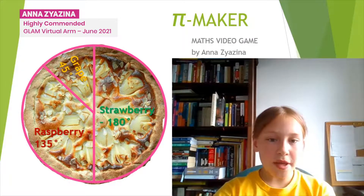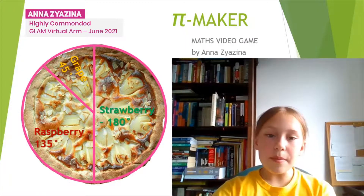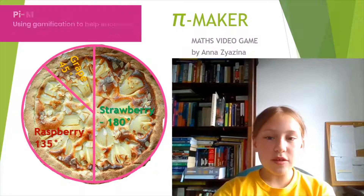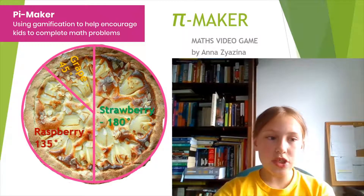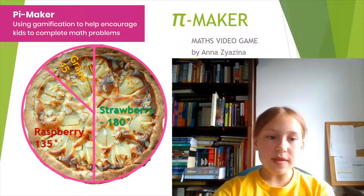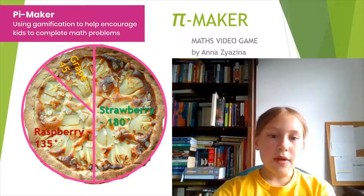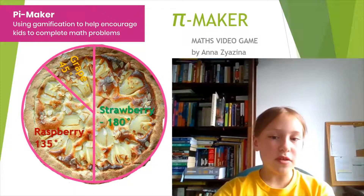It starts with a pie chart. The game provides an order and you need to fill in a pie chart — the shape of a pie, the angles and flavours according to the order. If the angles add up wrongly, the pie is faulty and you will have to redo it.